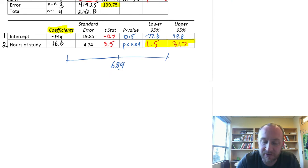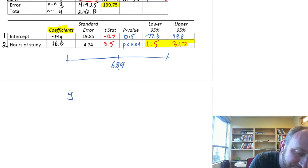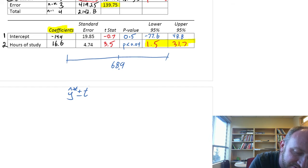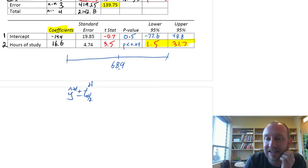So now, our formula for this confidence interval, as always, it's our point estimate, y hat star, plus or minus critical value. So our critical value, degrees of freedom, alpha divided by 2, times